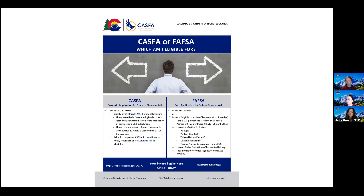I'm going to start with FAFSA first because FAFSA is a federal document. A U.S. citizen will complete a FAFSA. In addition, an eligible non-citizen will complete a FAFSA. An eligible non-citizen will be eligible either because they're a U.S. permanent resident, they have an I-94 document that indicates one of those following statuses, or potentially having a T visa or qualifying under VAWA. All of that information comes directly from FAFSA's website. If you have any questions about who's eligible for FAFSA, check their website because that's actually not our document.